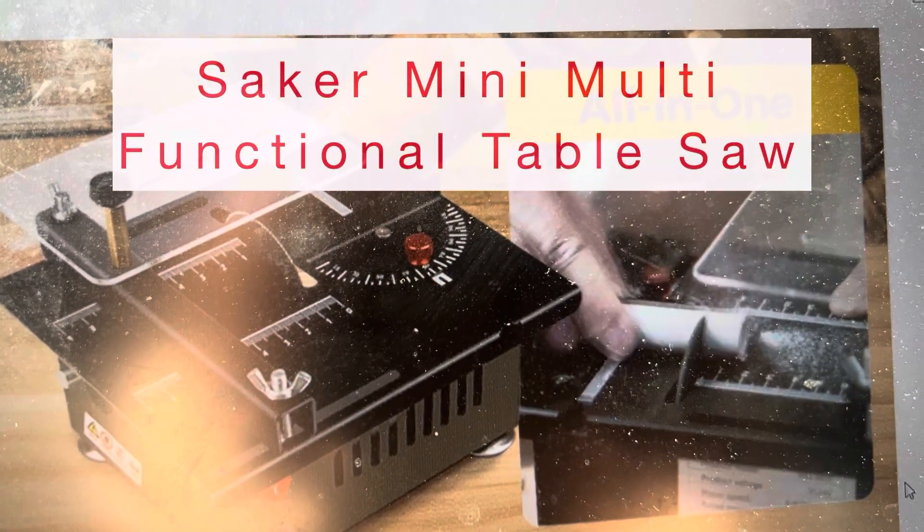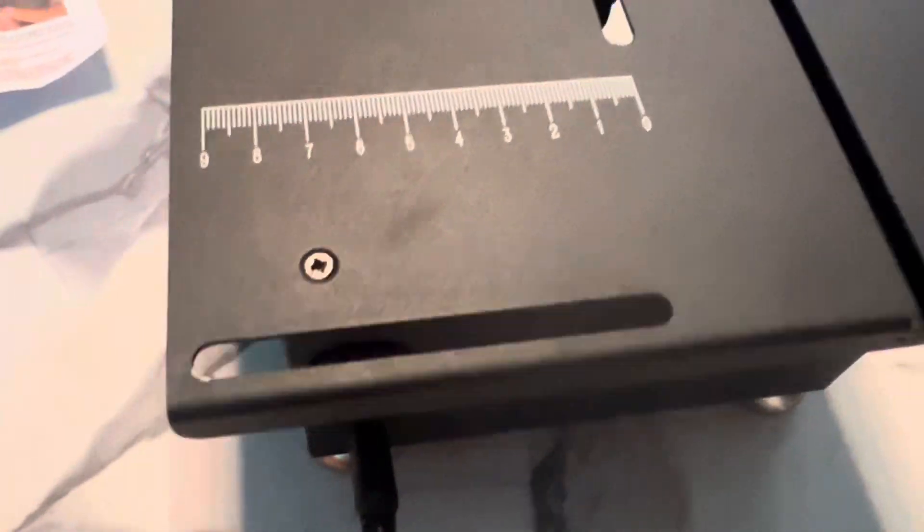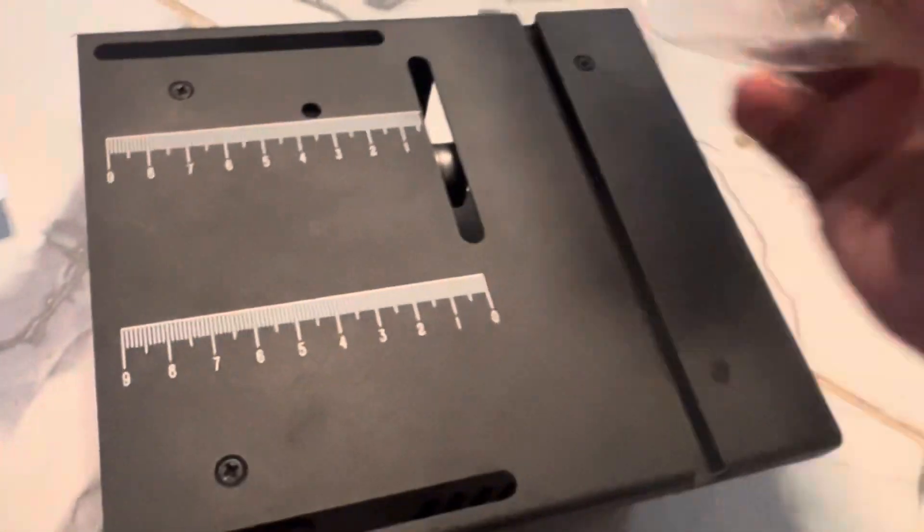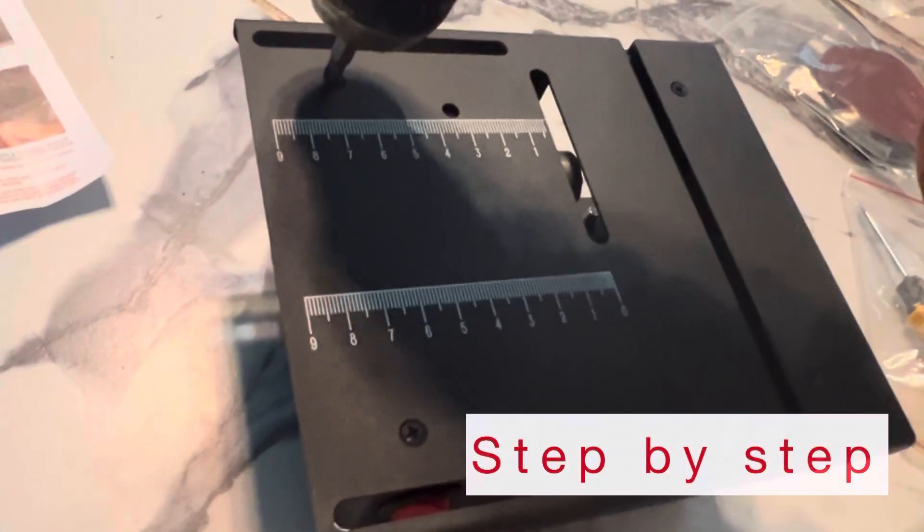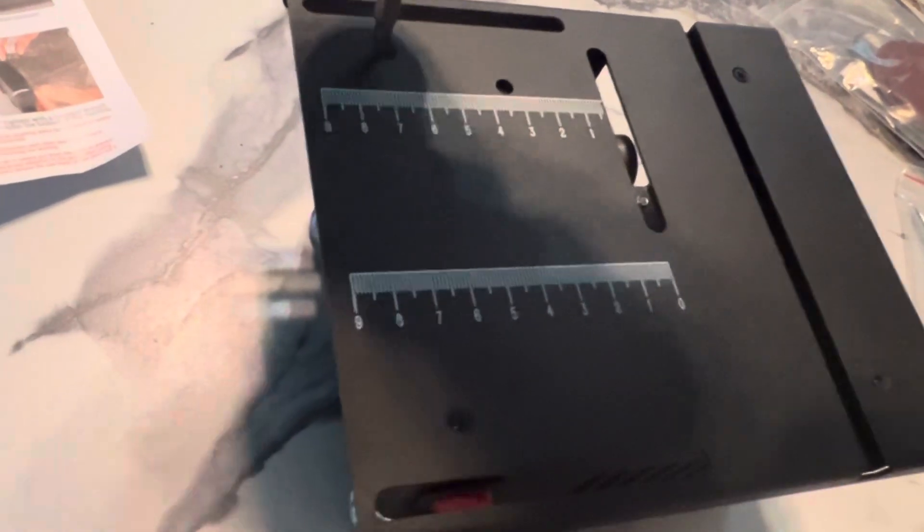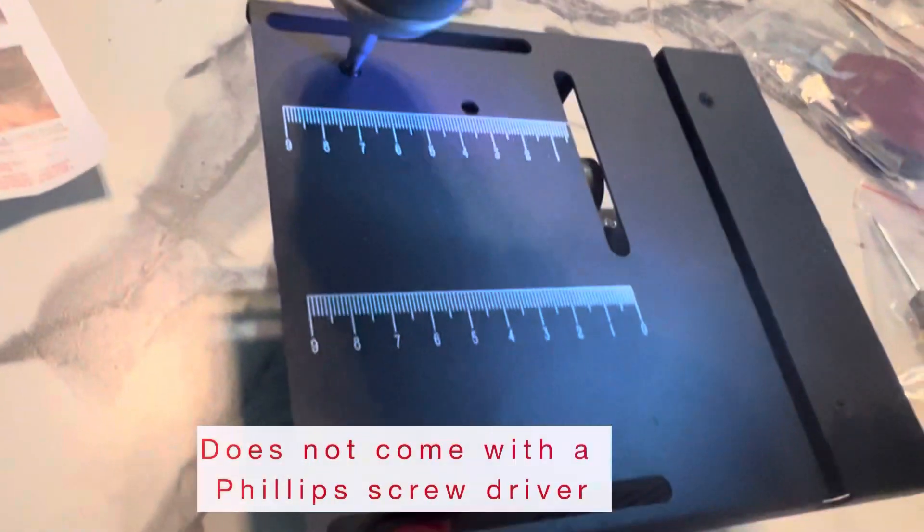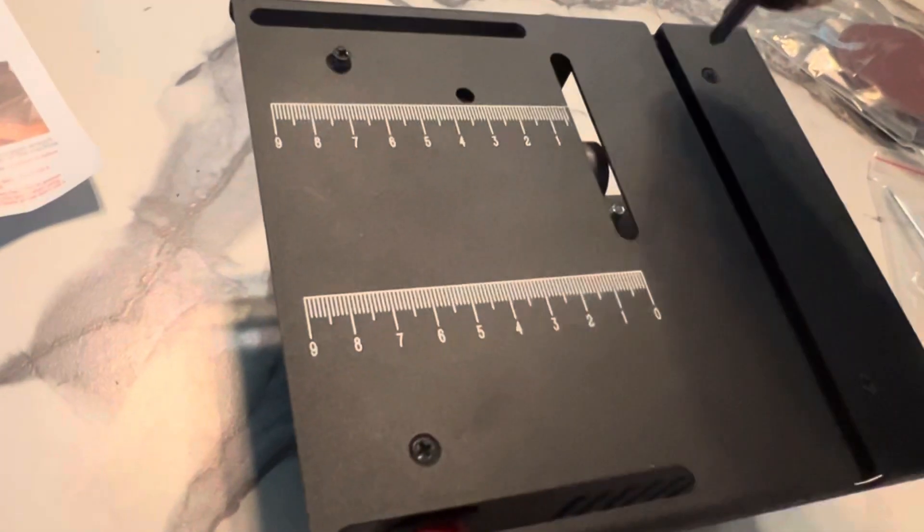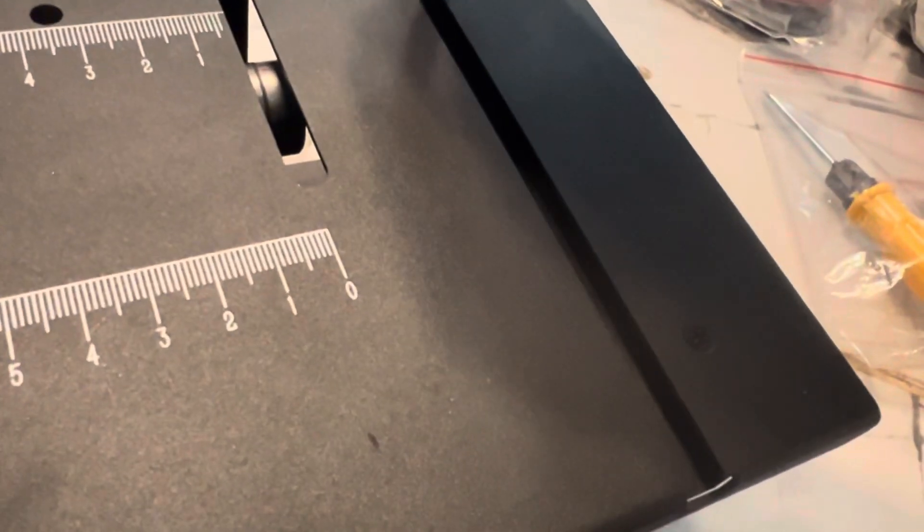This is the first step you need to know before you can start using your Seiker mini table saw. This is the multi-functional one. I bought the whole extended set. The first thing you need to do is install the blades, as the blades are not installed.